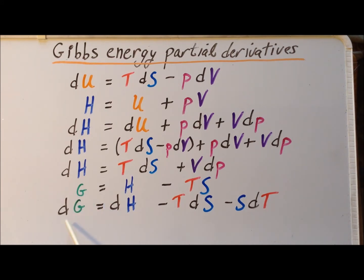So the differential of G is simply dG. The differential of H is simply dH. But then the differential of minus TS is going to be minus TdS minus SdT.